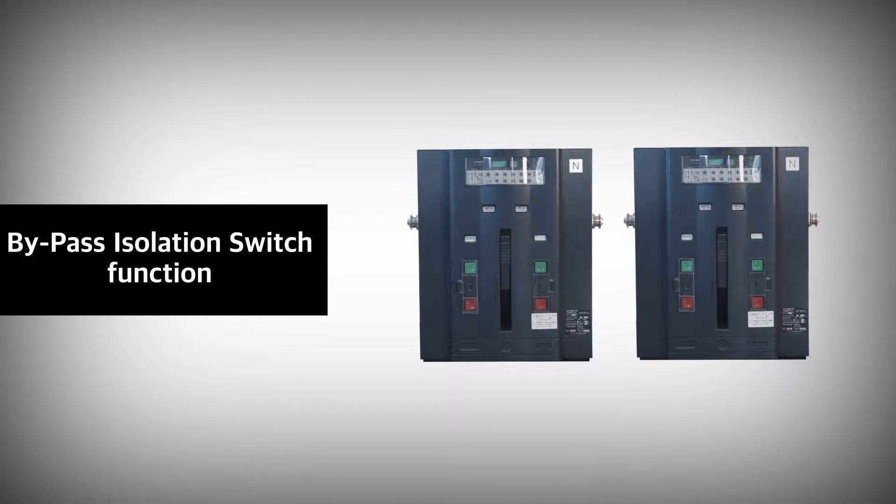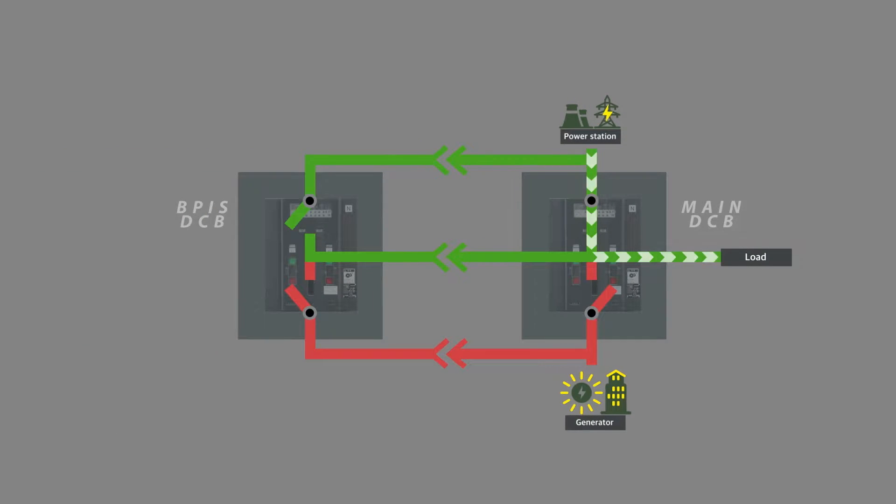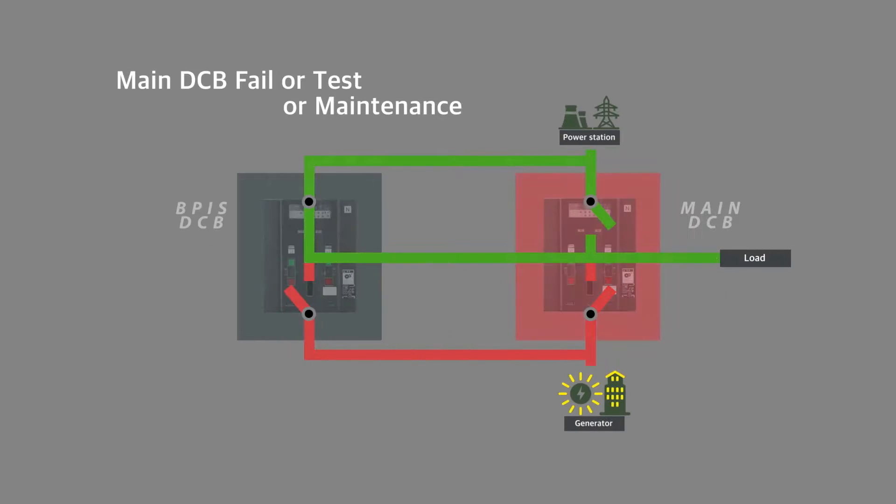PPIS function applies to the automatic transfer function which is one of the DCB functions. Two DCBs, the main DCB and the emergency DCB are installed. The emergency DCB supplies the load from the main or emergency power without trouble instead of the main DCB in case the main DCB is malfunctioning or is being repaired or tested.